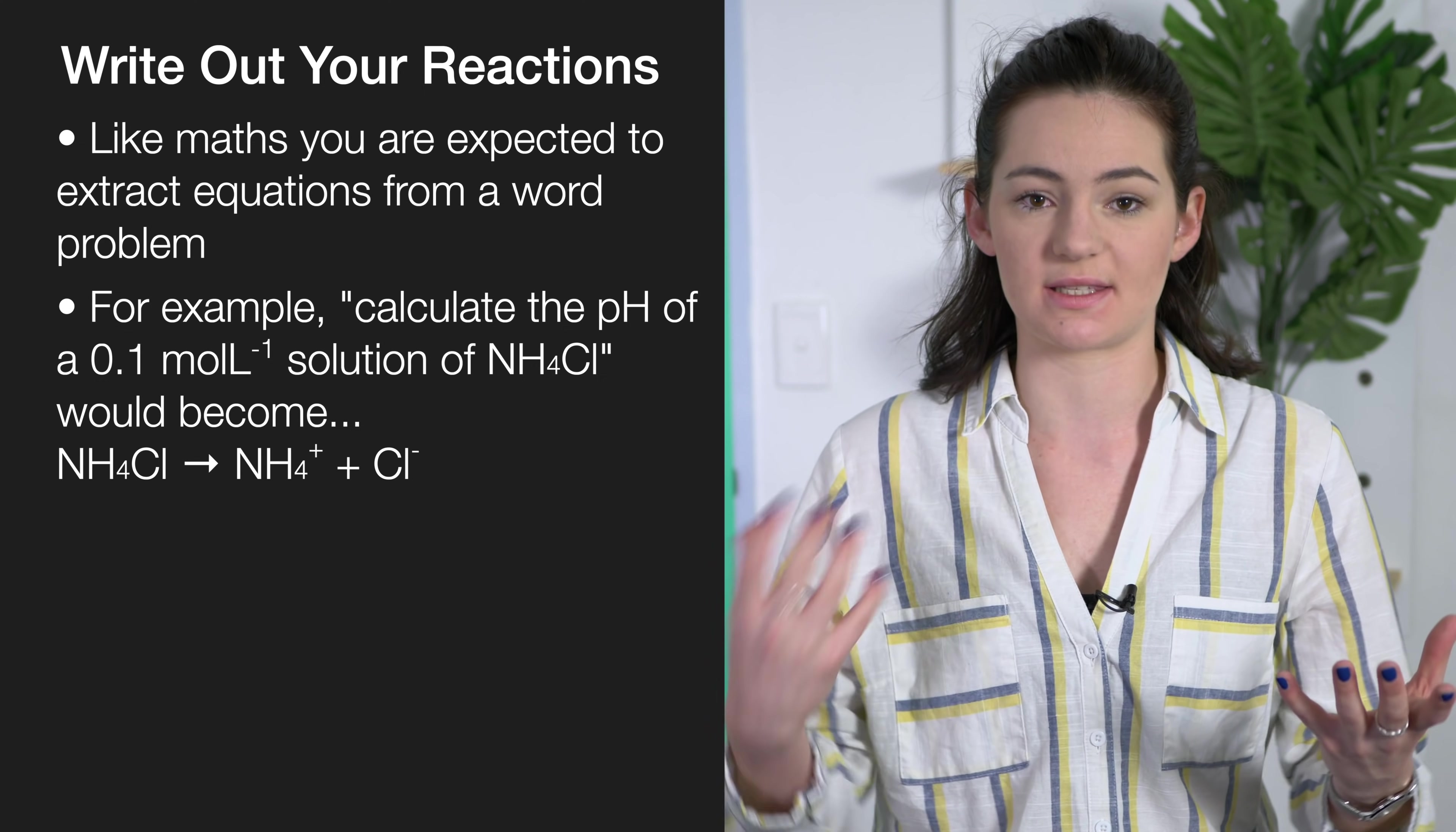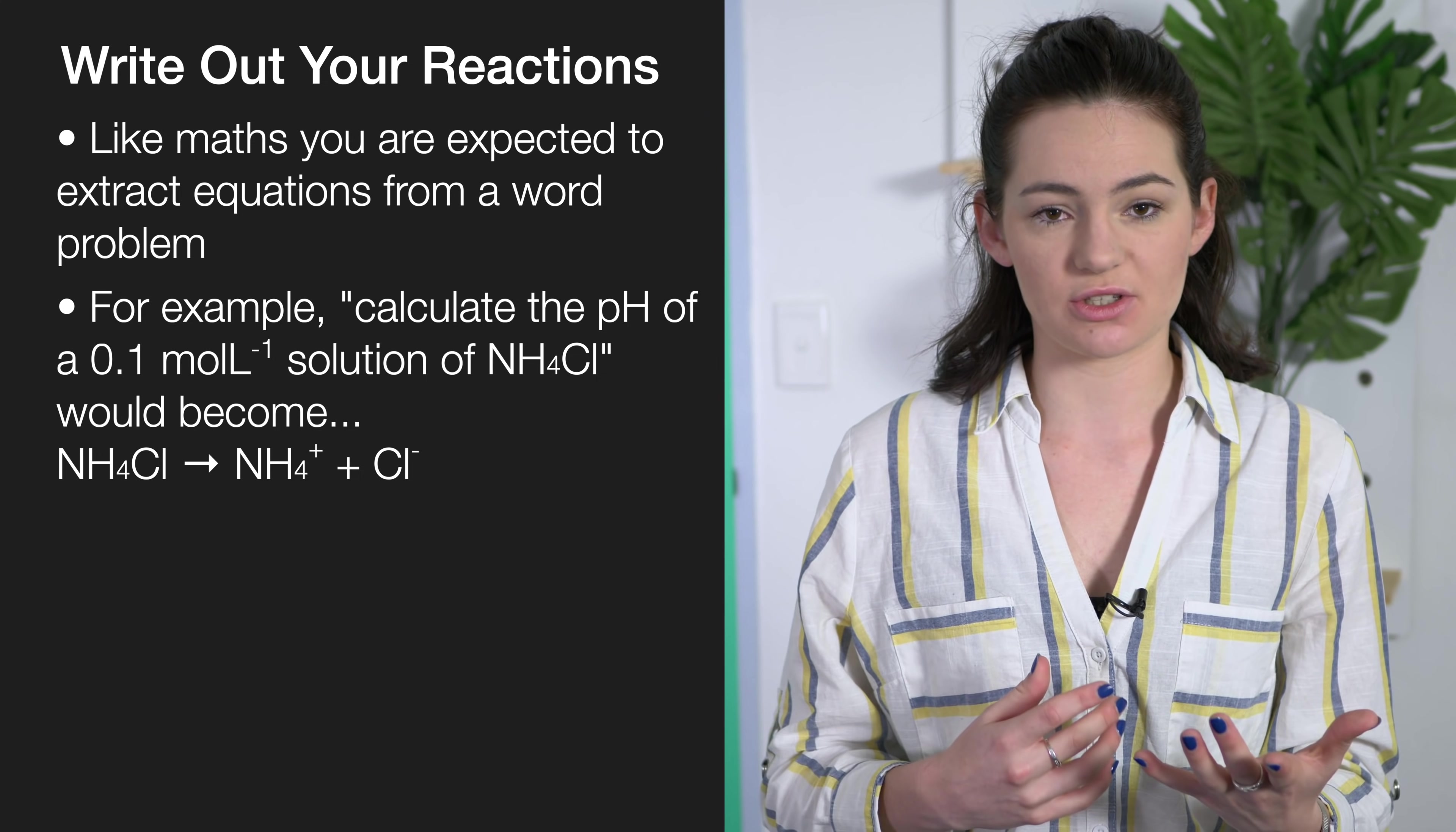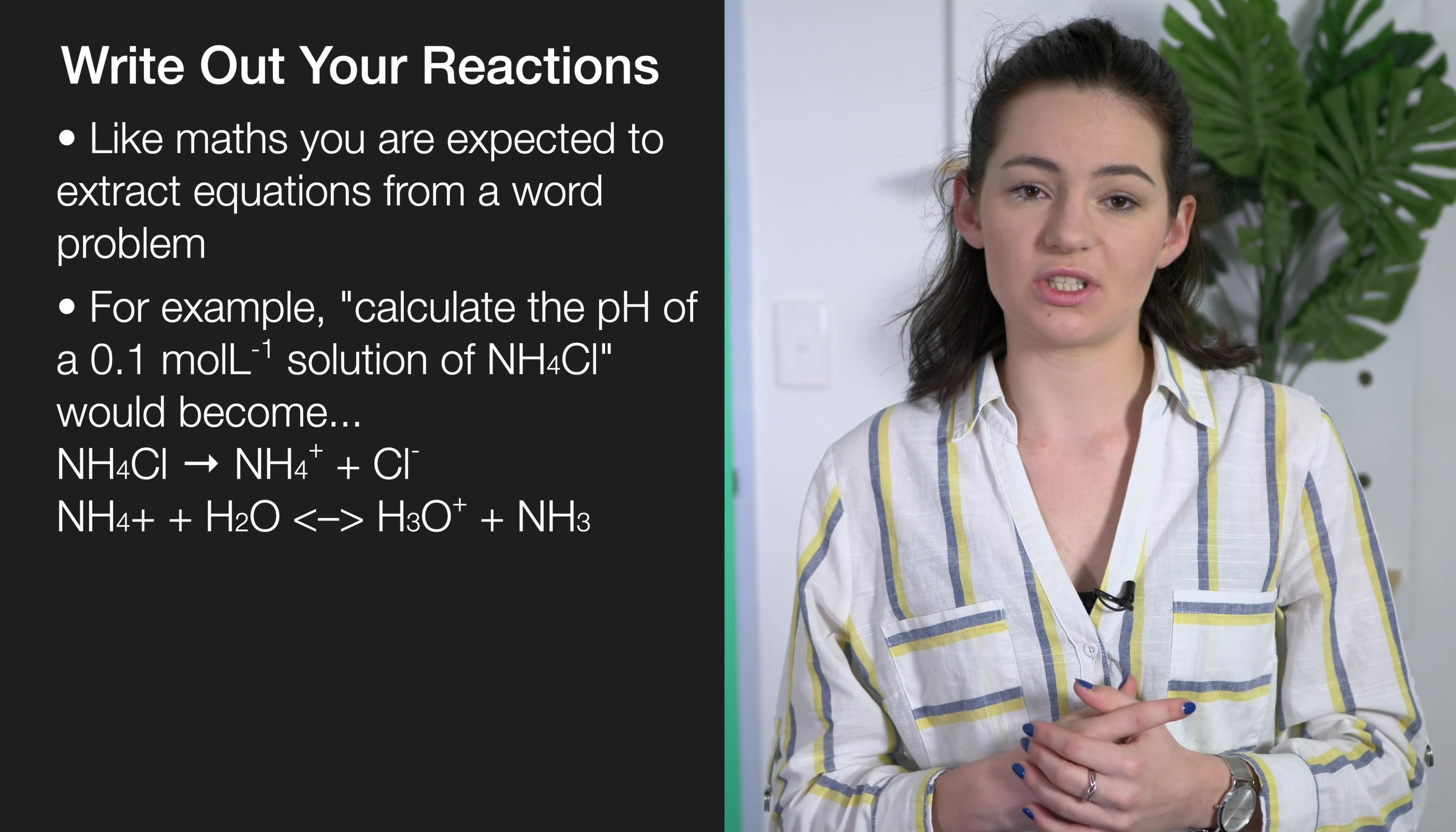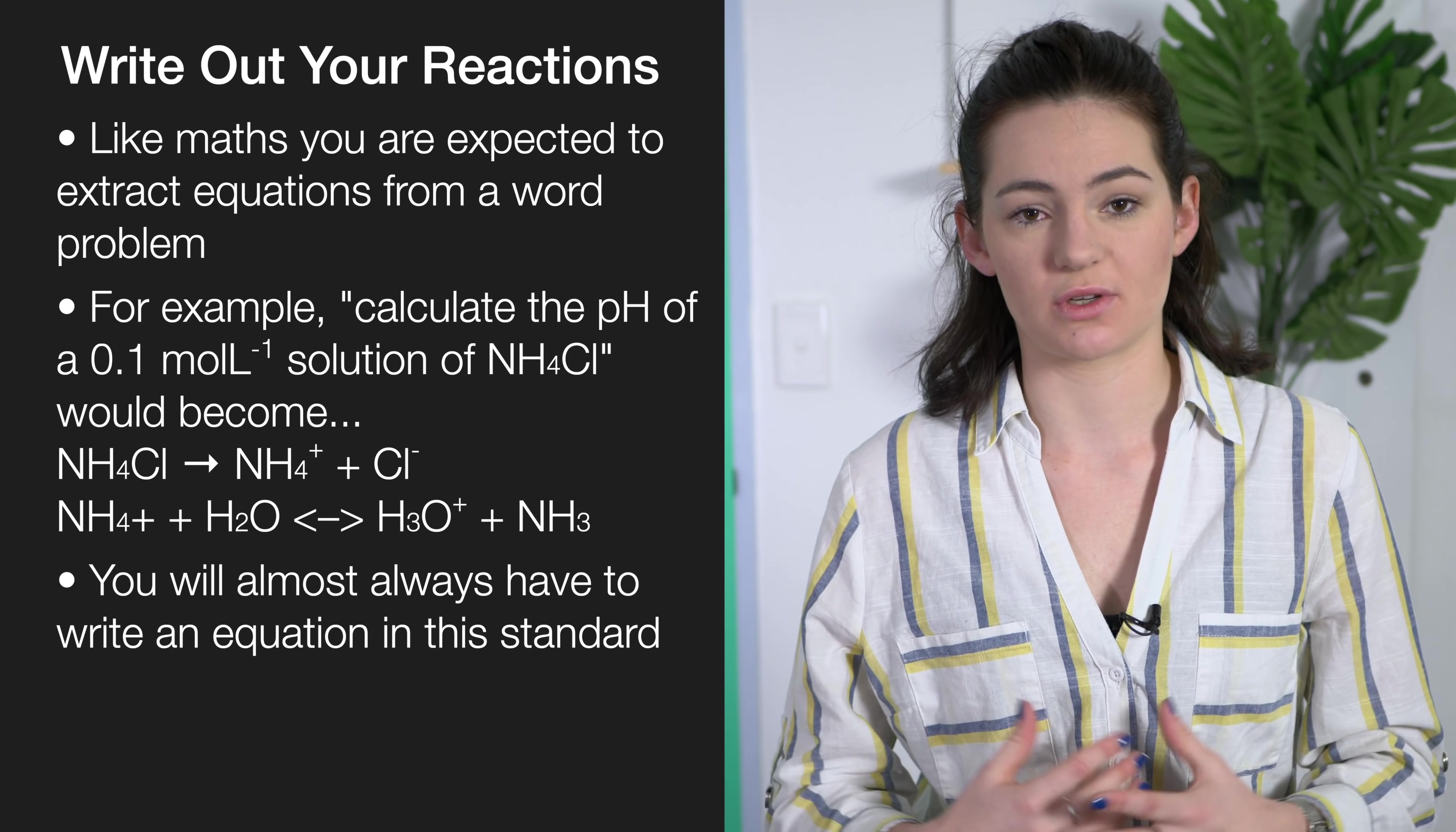You would get NH₄⁺ and Cl⁻, and then you would have to see what happens when you react NH₄⁺ with water. So then you would get NH₃ and H₃O⁺. You can then go on to calculate the pH or write out an expression for the equilibrium constant, or you can check out the different amounts of species in the solution. You are almost always expected to write out a reaction in this standard with most questions.